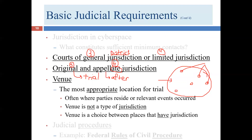An appellate court doesn't hear matters that should be resolved in a court of original jurisdiction, and a court of original jurisdiction doesn't hear appeals. So when analyzing any court situation, you have to ask: Is personal jurisdiction present? Is subject matter jurisdiction present? Is this a court of general or limited jurisdiction? Is this a court of original or appellate jurisdiction? You have to look at all those levels.